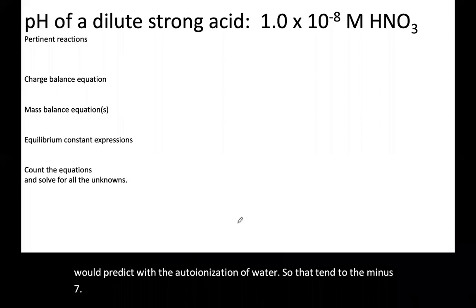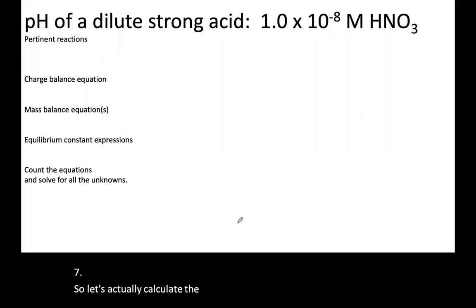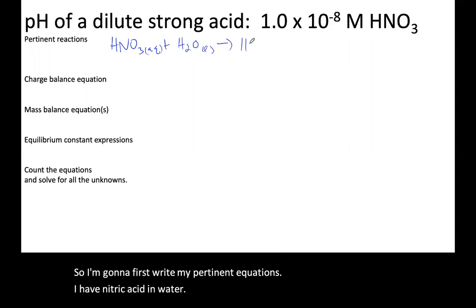So let's actually calculate the pH of a dilute strong acid, nitric acid here. I'm going to first write my pertinent equations. So I have nitric acid in water, and that's going to form H3O plus and my nitrate ion.